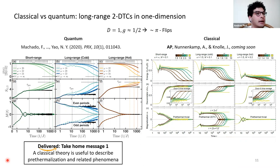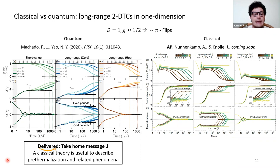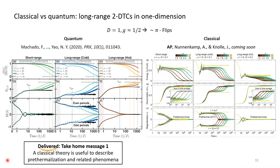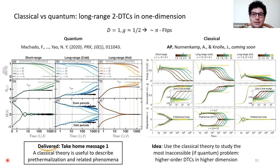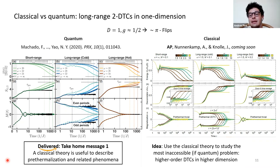Pre-thermal discrete time crystals without disorder are very different from many-body localized discrete time crystals, which rely on disorder and persist up to infinite time. The physics here seems robust to quantum fluctuations rather than due to them. If so, a classical theory is very informative, and we can use it to study phenomena most difficult to access quantum mechanically — in particular, higher-order discrete time crystals in higher dimensions.